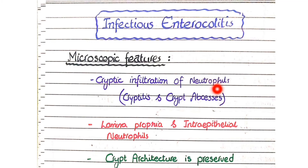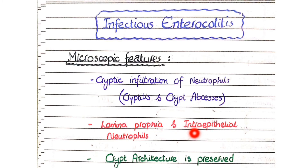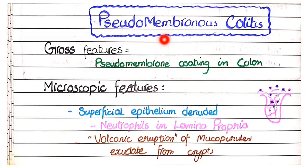To revise: in infective enterocolitis you see cryptic infiltration of neutrophils as cryptitis and crypt abscesses, lamina propria and intraepithelial neutrophils, and preserved crypt architecture. Now let's move to the pathological features of pseudomembranous colitis.